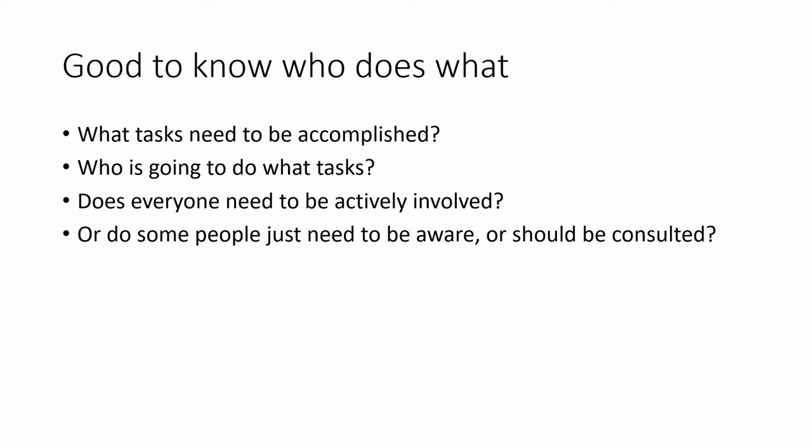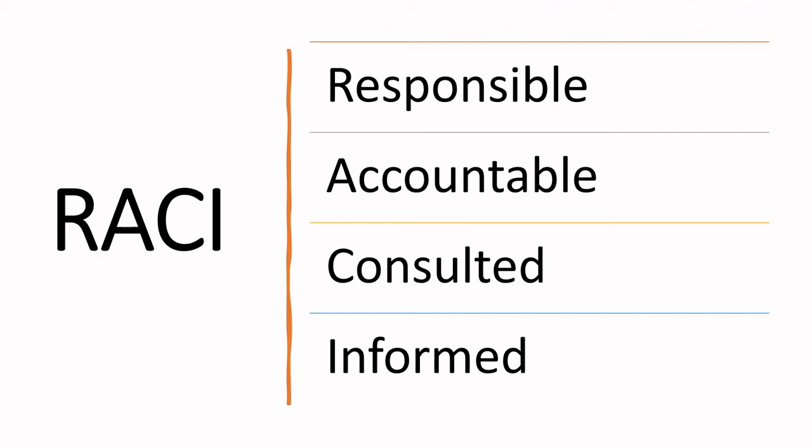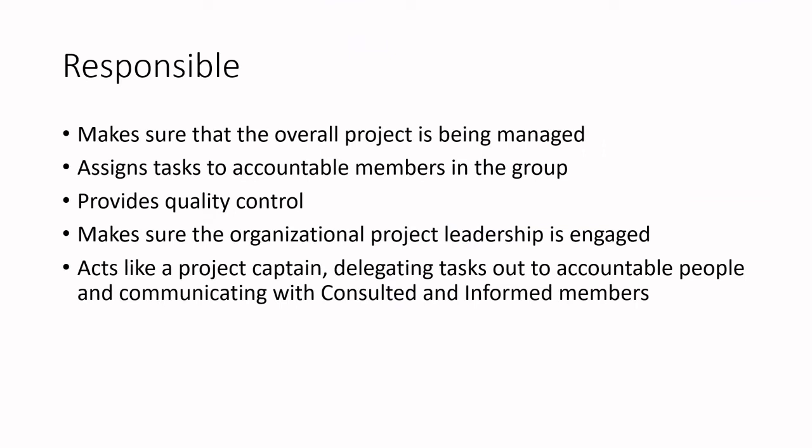It's all about understanding what tasks need to be accomplished. We have other videos on project planning, walking through tasks and critical path mapping, but RACI is specifically about who is doing which tasks — who needs to be actively involved, or who just needs to be aware or consulted. RACI is an acronym; you'll hear people say 'racy' or 'racey.'